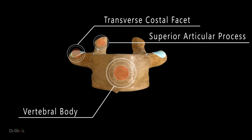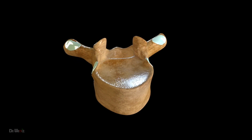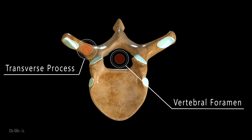The transverse costal facet, located on the transverse process of each thoracic vertebra, articulates with the tubercle of the rib of the same number. The vertebral body is located anteriorly to the vertebral arch and forms the main mass of the thoracic vertebra. The vertebral foramen, located in the center of the vertebra, contains the spinal cord. Above and below the vertebral foramen, there are superior and inferior articular facets respectively, which articulate with the adjacent vertebrae.